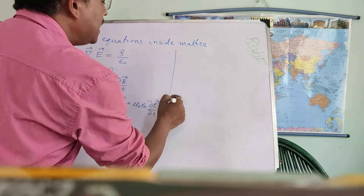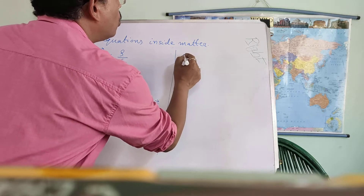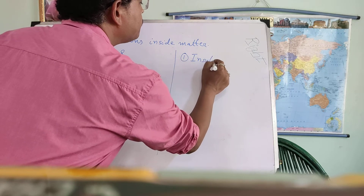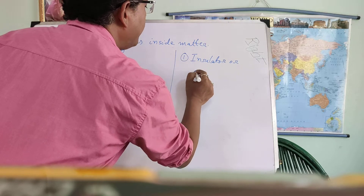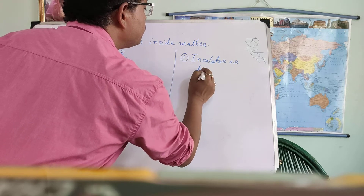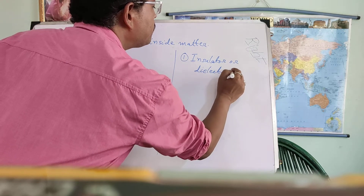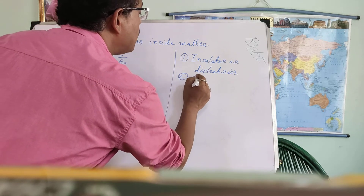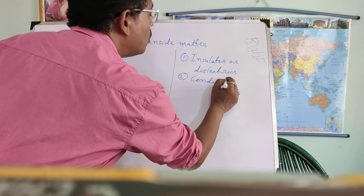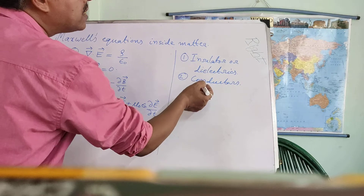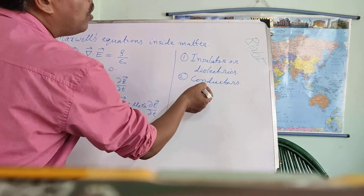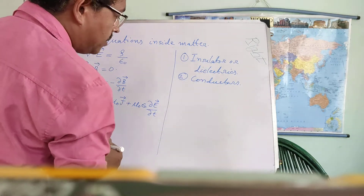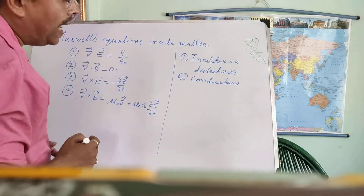From the sense of electricity, matter can be classified into two groups. One is insulators or dielectrics — these are the bad conductors of electricity. Two, there are conductors, which are good conductors of electricity. Metals come in this class where free electrons are the charge carriers, and there are also ionic conductors where ions carry the electricity. Mainly we will concentrate on dielectric materials.